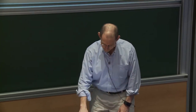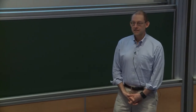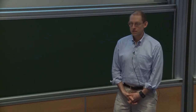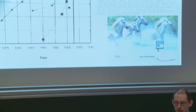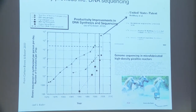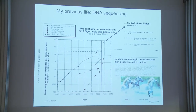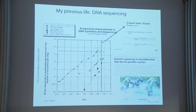Saccharomyces cerevisiae 2.0. The introduction: my previous life before I was an academic at Johns Hopkins, I worked at a biotech company. The last product I worked on there was the 454 genome sequencer. It was really exciting at the time — this is a curve from 2003 showing that our machine was the world leader in DNA sequencing, only for a couple of years.